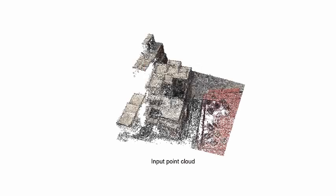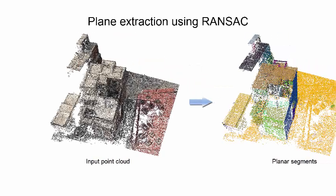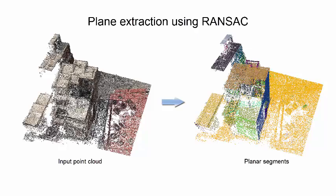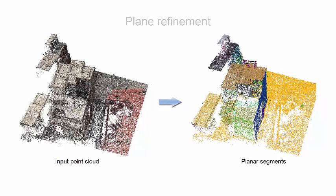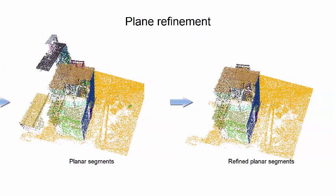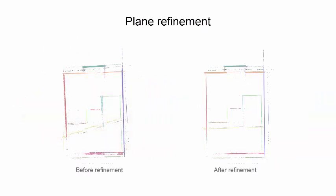Given an input point cloud, we first extract planar segments from the point cloud using RANSAC. Then we refine these planar segments such that they comply with dominant directions. Here we show the planar segments before and after the refinement.